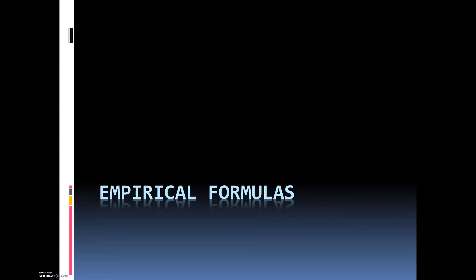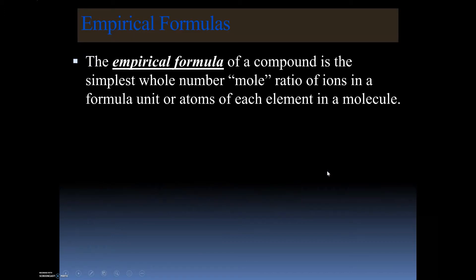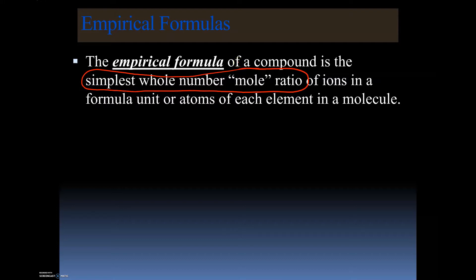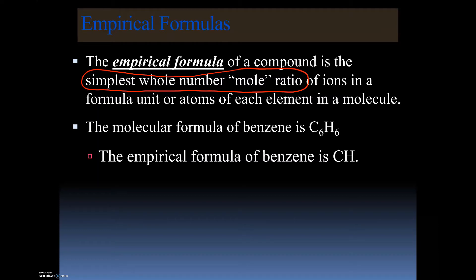In this video we're going to be discussing empirical formulas. An empirical formula of a compound is the simplest whole number mole ratio of ions in a formula unit, or atoms. What I want you to remember is that it is the simplest whole number mole ratio, and we're dealing with whole numbers. Empirical formulas are just a simplification.